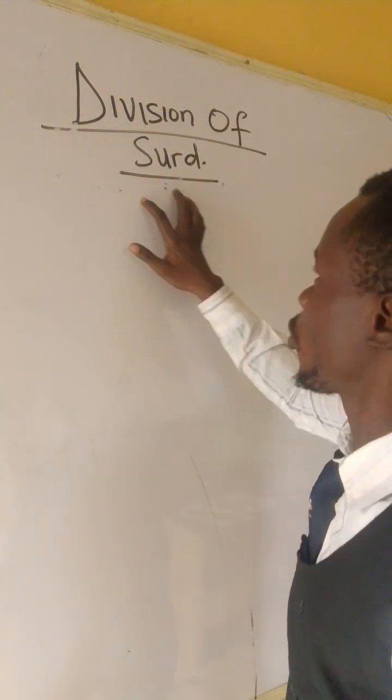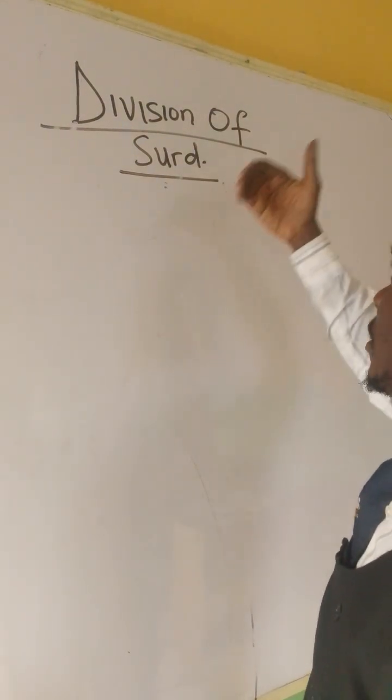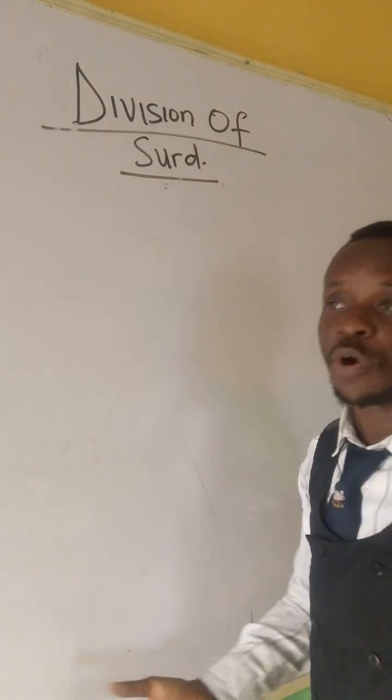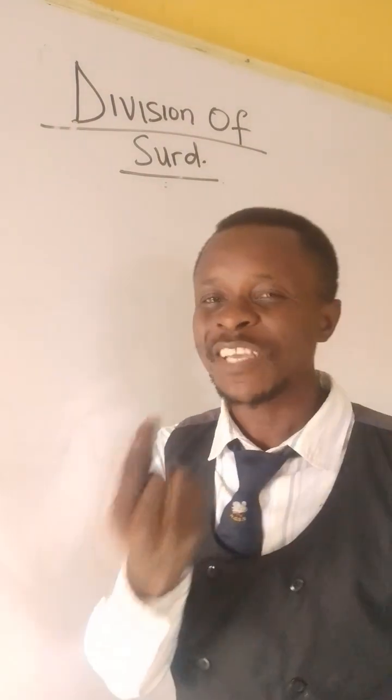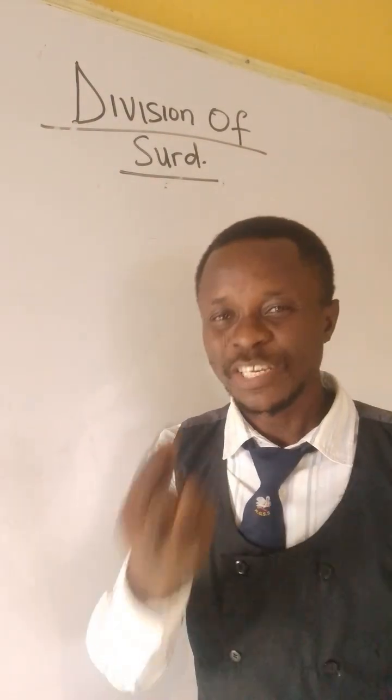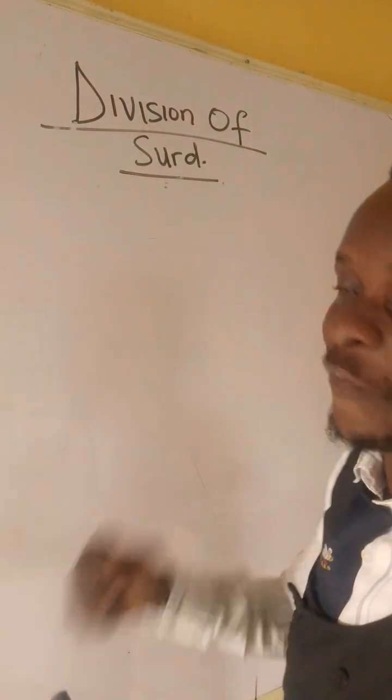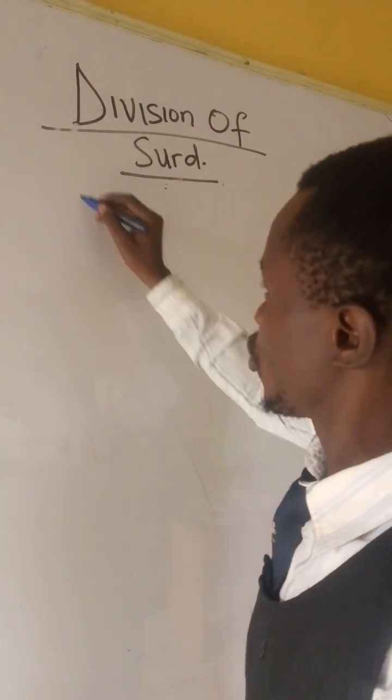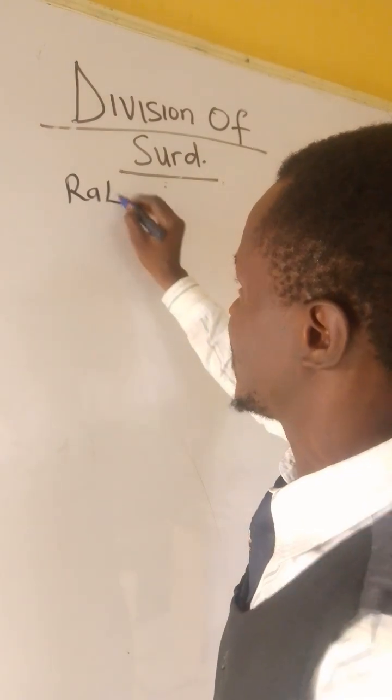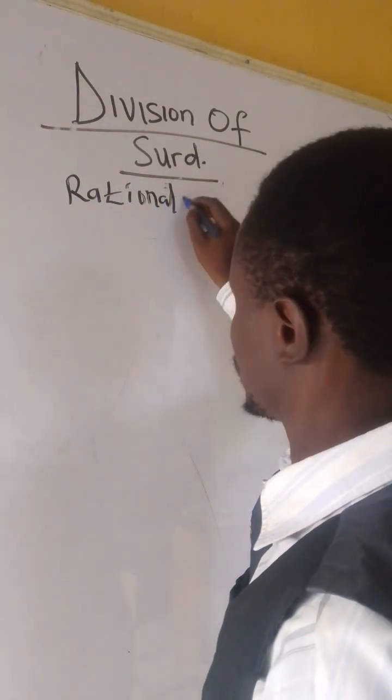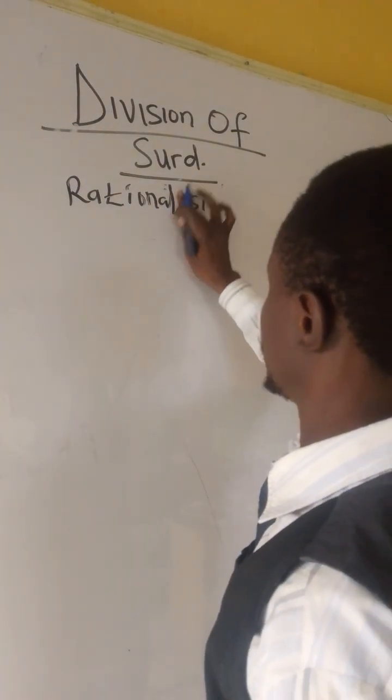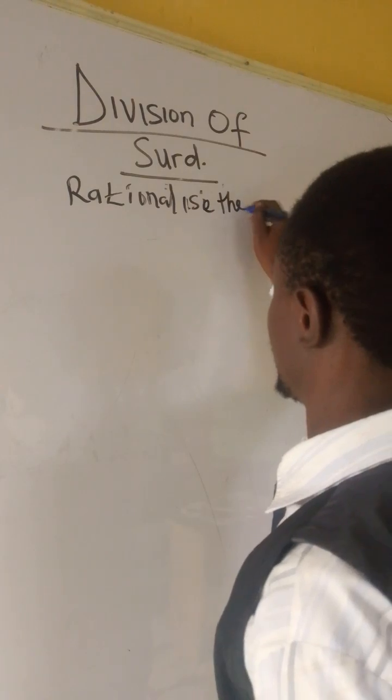Now, what differentiates how we divide surd from every other division is just a very simple thing. They use the same rule, but what differentiates them is the fact that in surd, what we do is to rationalize the denominator. That's what we do. We rationalize the denominator.